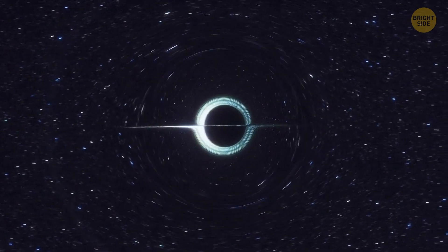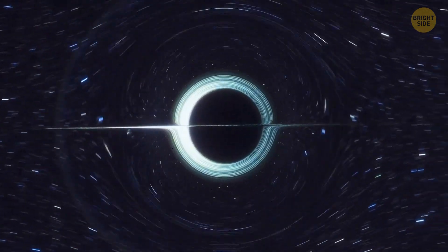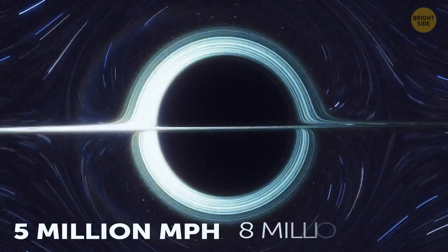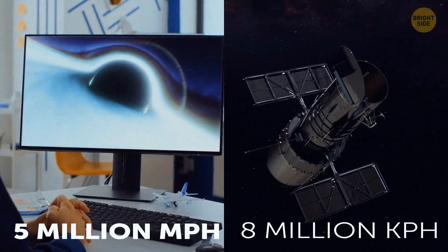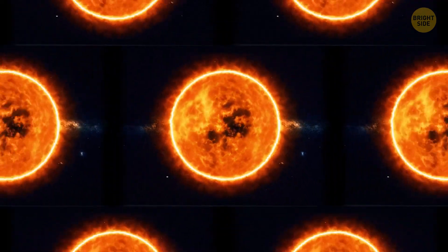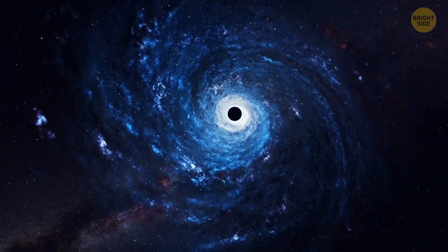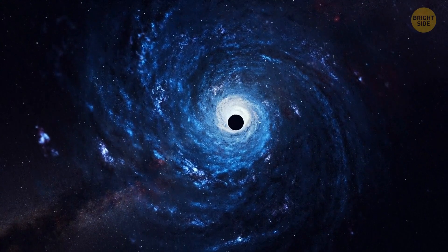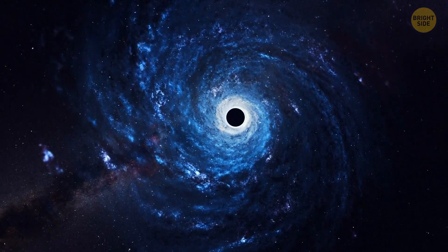There's a monster black hole hurtling through space at a speed of 5 million miles per hour. Scientists located it with the Hubble Space Telescope. They believe it weighs as much as a billion suns. It was supposed to stay put in the center of its home galaxy, but some gravitational forces are pushing it around.